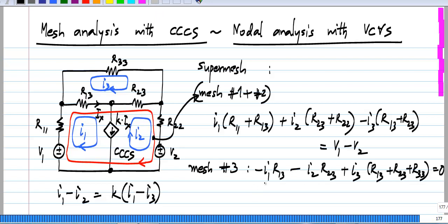So, if I take all the unknowns on the left side, I will get the equation for the current controlled current source, which is that I1 times (1 minus k) minus I2 plus k times I3 equals 0.